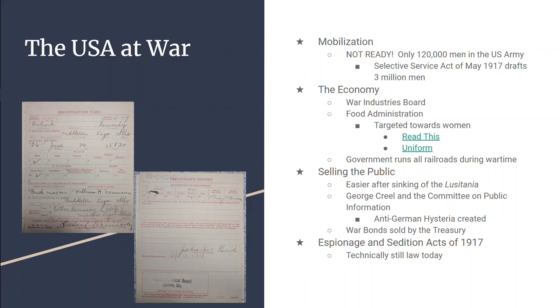And Eugene V. Debs is going to run for president again, running from jail, because he speaks out against the government and is arrested under the Espionage and Sedition Acts of 1917.